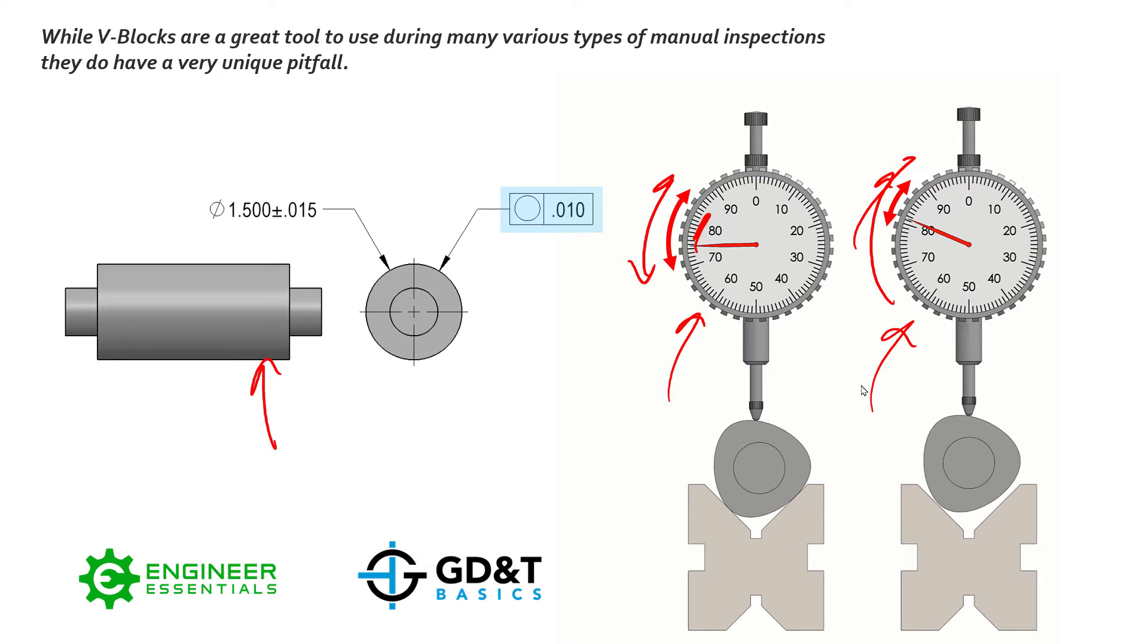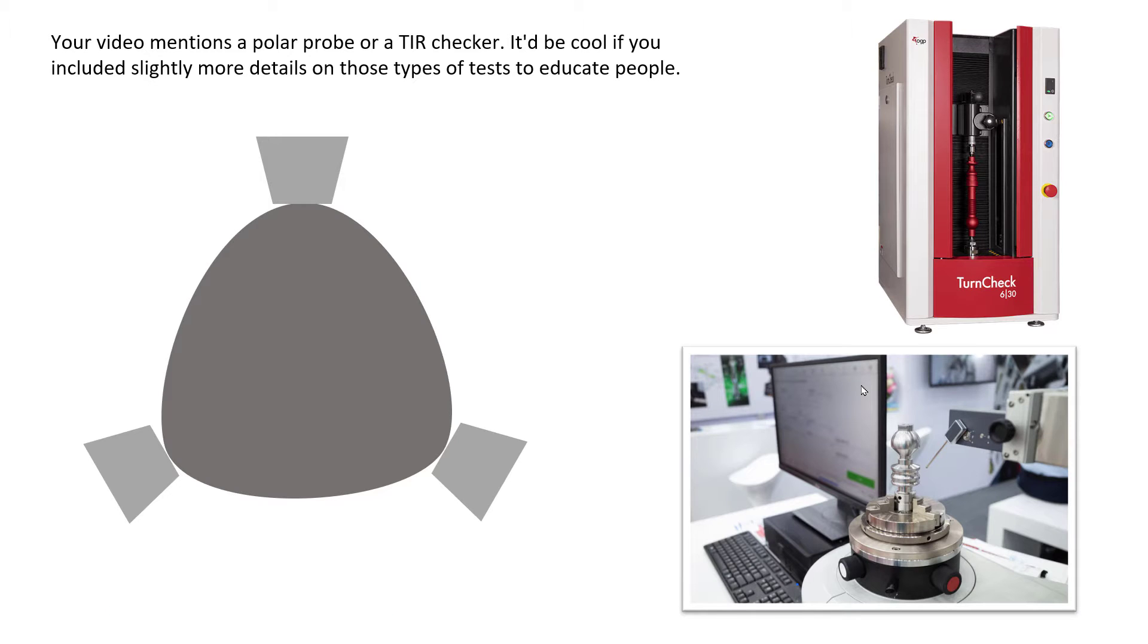The question was, could you show more detail on how polar probes and runout checkers actually inspect this part and negate this sort of issue? For those of you that aren't familiar, this is a turn check, a runout checker if you will, a machine that's highly calibrated and ready to check runout, cylindricity, and circularity to an extremely accurate level. This down here is similar to a polar probe. You can see the stylus or the probe coming in there to measure the part that's clamped into the vice that's part of the machine.